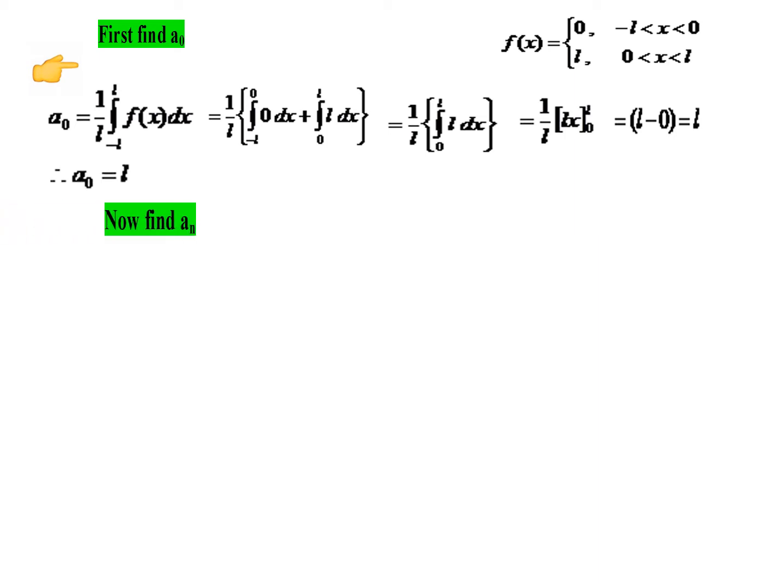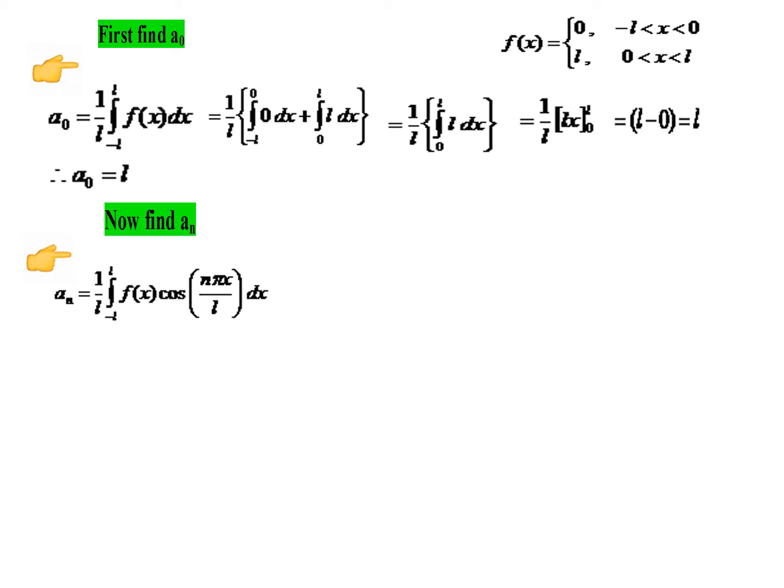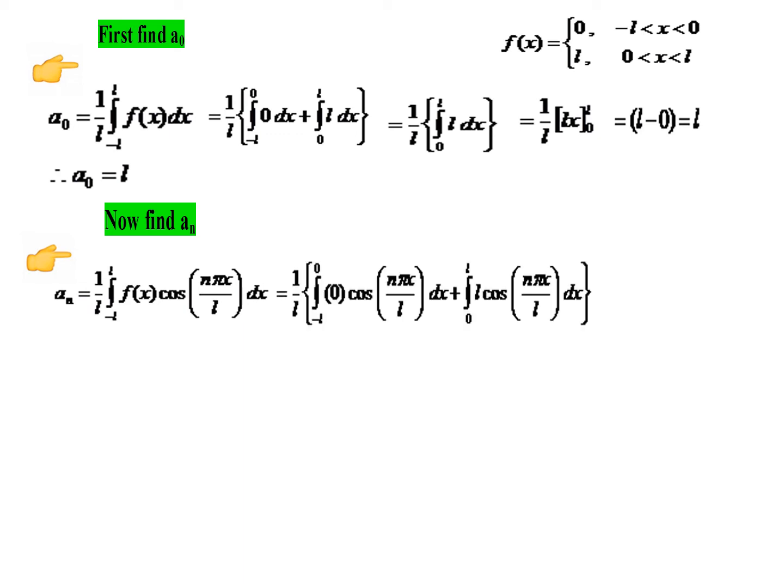Now let us find the next Fourier constant Aₙ. The formula is Aₙ = (1/L) ∫₋L^L f(x) cos(nπx/L) dx. As before, we split the integral: from −L to 0 the function is 0, and from 0 to L the function is L.